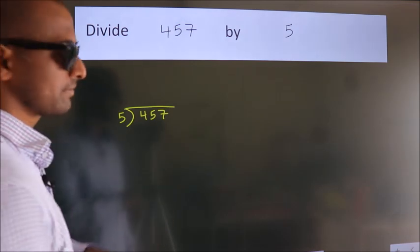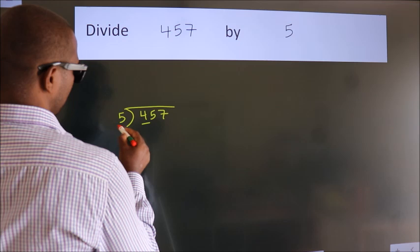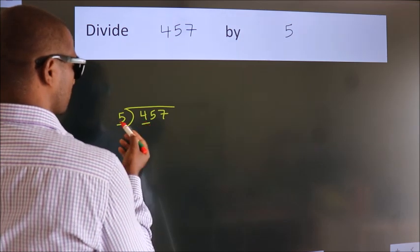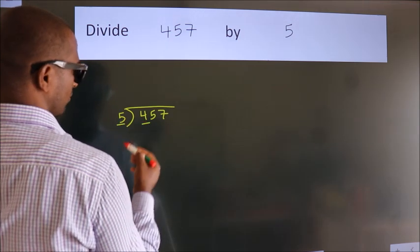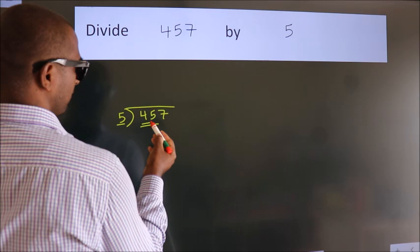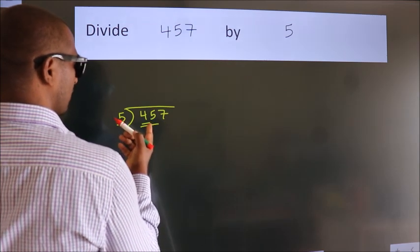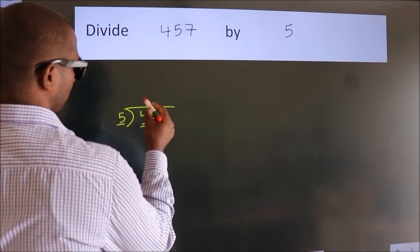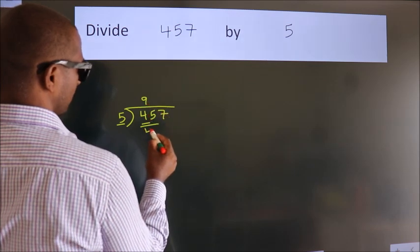Next, here we have 4, here 5. 4 is smaller than 5, so we should take two numbers: 45. When do we get 45 in the 5 table? 5 nines, 45.